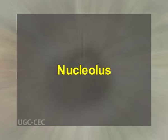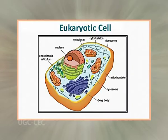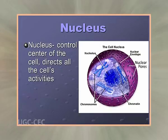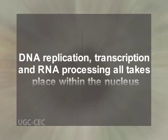First and foremost, an introduction about the Nucleolus. The presence of a Nucleolus is the principal feature that distinguishes eukaryotic cells from prokaryotic cells. By housing the cell's genome, the Nucleolus serves both as the repository of genetic information and as the cell's control center. DNA replication, transcription, and rRNA processing all take place within the Nucleus.